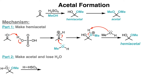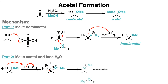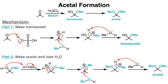The second part of the mechanism produces an acetal with the loss of a water molecule. It begins with the OH group of the hemiacetal getting protonated, which becomes a good leaving group. Then one of the lone pairs on oxygen reforms a carbonyl while water leaves. Then the second methanol molecule attacks the electrophilic carbon to generate another oxonium intermediate. Then the hydrogen atom gets deprotonated to form the final acetal product.